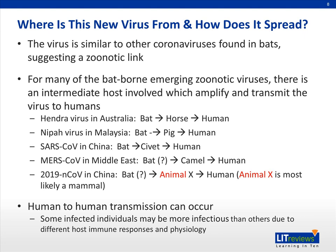There is a lot of media attention on where this virus is from. The virus is similar to other coronaviruses found in bats, suggesting a zoonotic link. For many bat-borne viruses, an intermediate host is needed. For example, Hendra virus in Australia is bat-to-horse-to-human transmission; Nipah virus in Malaysia is bat-to-pig-to-human; and SARS coronavirus in China is bat-to-civet-to-human. For MERS, the virus went through camels before transmitting to humans. For this new coronavirus, bats are believed to be the natural reservoir, but the transmitting animal — which I call animal X — is unknown and most likely a mammal. The discussion about snakes as an intermediate host is unlikely. Human-to-human transmission can occur, and some infected individuals may be more infectious than others due to differences in immune response and physiology.